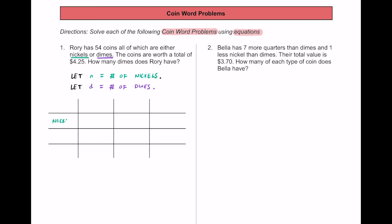Let's go ahead and put the nickels in the first row, then the dimes in the second row, and underneath that the total number of coins. For the column labels, the first column will be the number of each coin, the next column will be the value of each coin, and the last column will represent the total value.